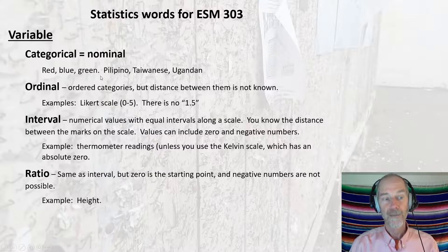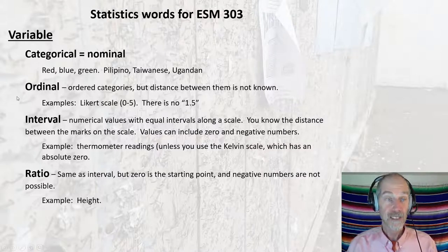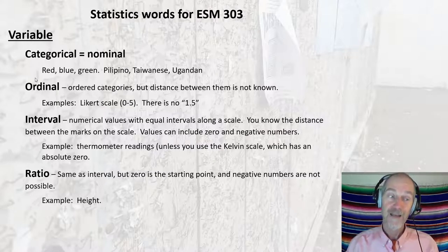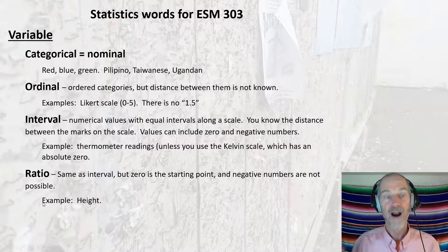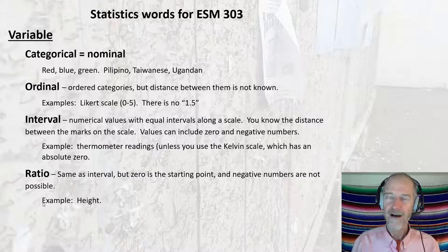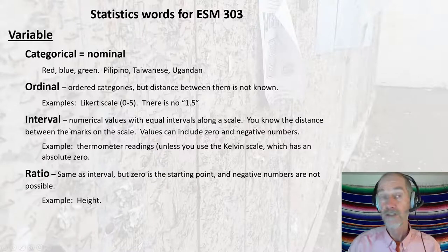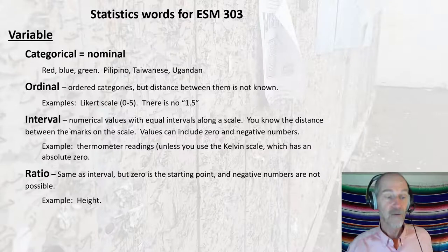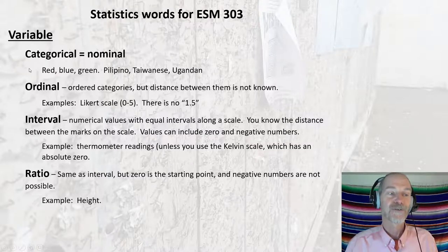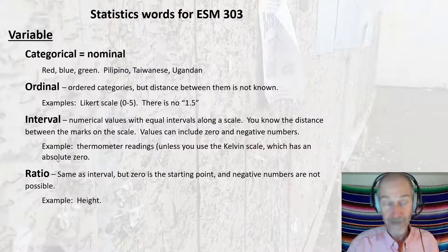Where this becomes important statistically is with categorical or ordinal variables — for these, the statistical test you'll typically use is a chi-square test. When you start measuring things for your RES, you have to think about what kind of variable you're dealing with. The number of each bird species in the Arcata marsh would be categorical data. Whereas if you wanted to measure tree circumference, that would be ratio data. For the former you'd use chi-square; for the other, different statistical tests.